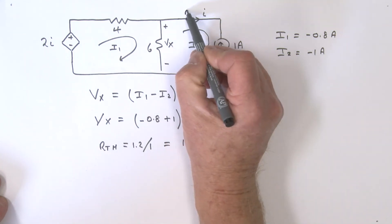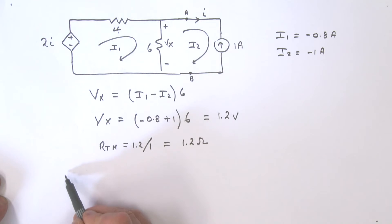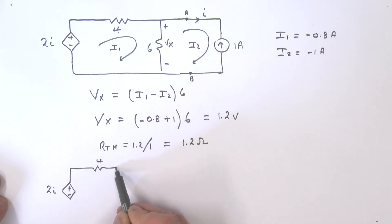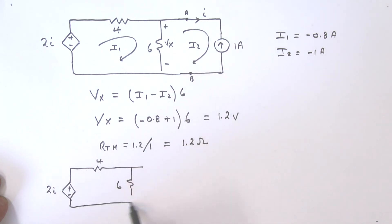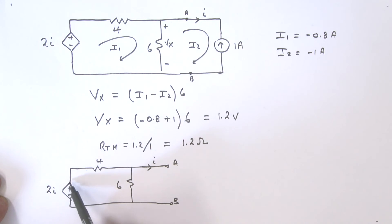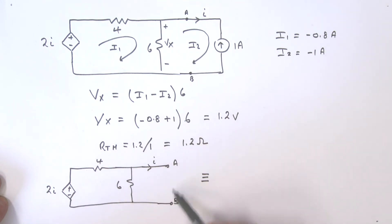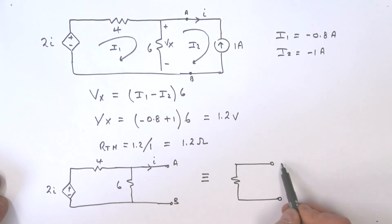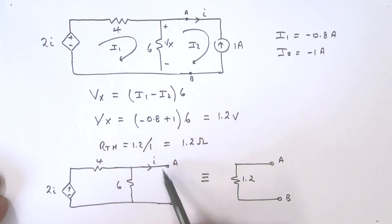So going back to our original circuit — terminals A and B, with the dependent voltage source 2I, the 4-ohm resistor, the 6-ohm resistor, and current I — the Thévenin equivalent of this circuit as seen from terminals A and B is simply a single resistor of 1.2 ohms. This is equivalent to that original circuit.